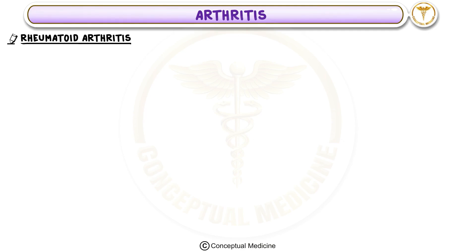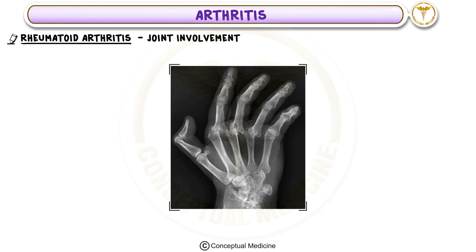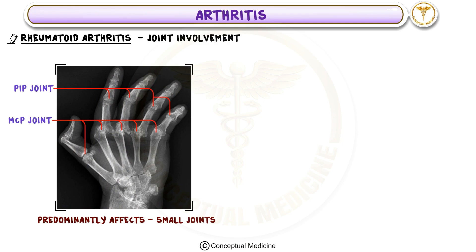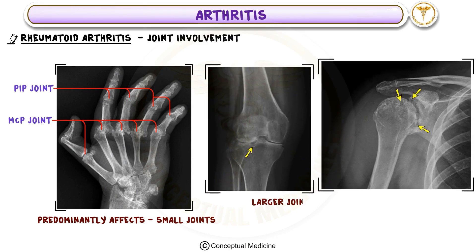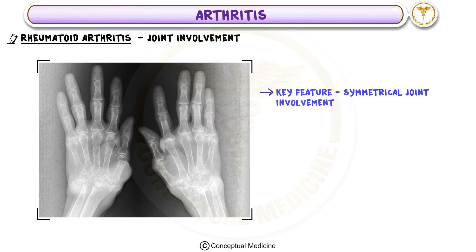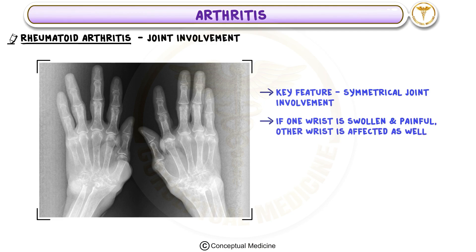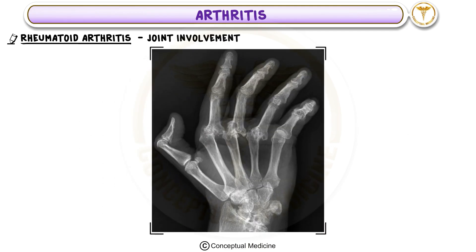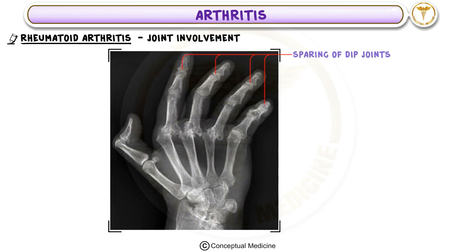Rheumatoid Arthritis — Joint Involvement: Rheumatoid arthritis predominantly affects small joints like the metacarpophalangeal and proximal interphalangeal joints. Larger joints such as the knee or shoulder can also be involved but are less commonly affected. A key feature is symmetrical joint involvement — the same joints on both sides of the body are affected. Another distinguishing feature is sparing of the distal interphalangeal joints, helping differentiate it from osteoarthritis.